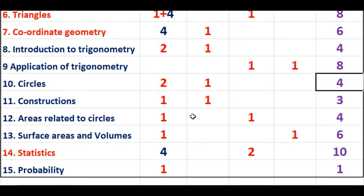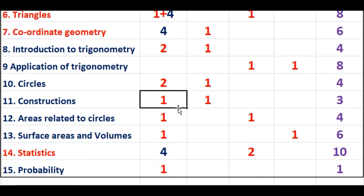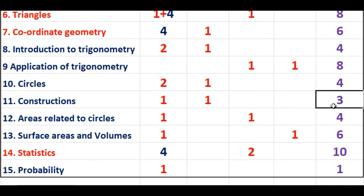From the chapter Circles, two questions of one mark and one question of two marks, so a total of four marks will be asked. This time the four-mark question has been deleted and five-mark questions have been introduced instead.